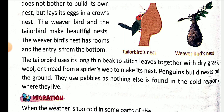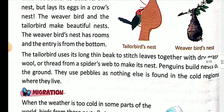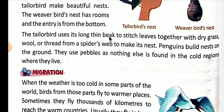The weaverbird and the tailorbird make beautiful nests. The weaverbird's nest has rooms and the entry is from the bottom. The tailorbird uses its long thin beak to stitch leaves together, and uses grass, wool, or thread from a spider's web to make its nest.